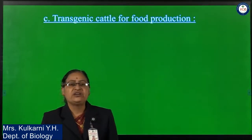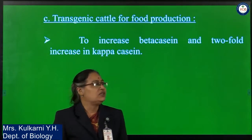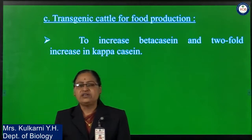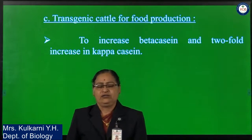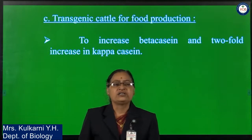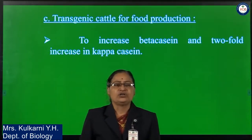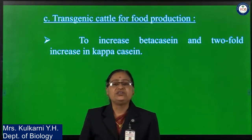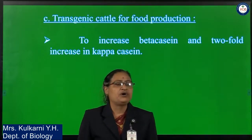Next, transgenic cattle for food production. Through laboratory investigation, researchers have increased beta casein and kappa casein levels in transgenic cattle. This offspring gives about a 2 to 80% increase in beta casein and a 2-fold increase in kappa casein.